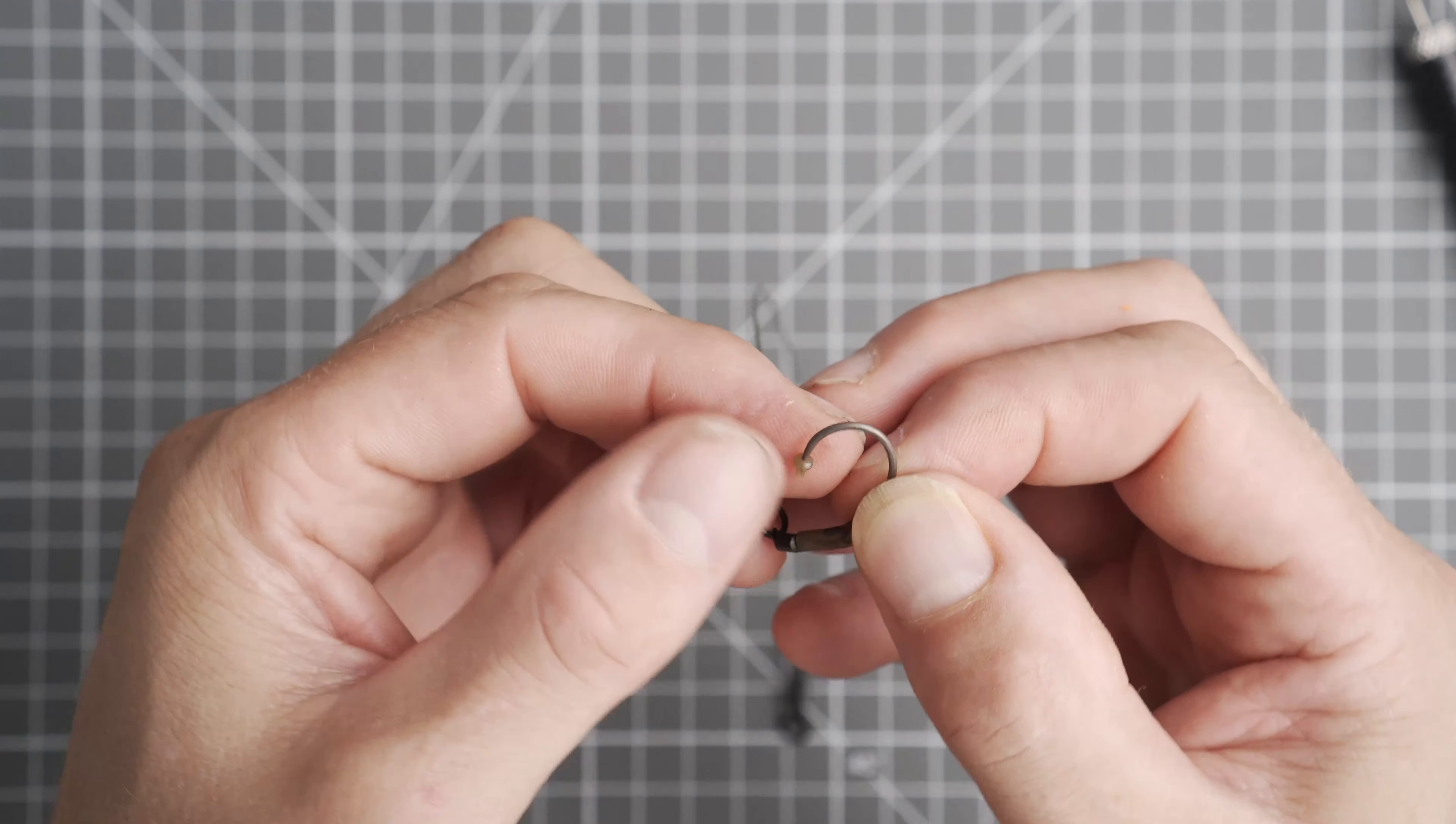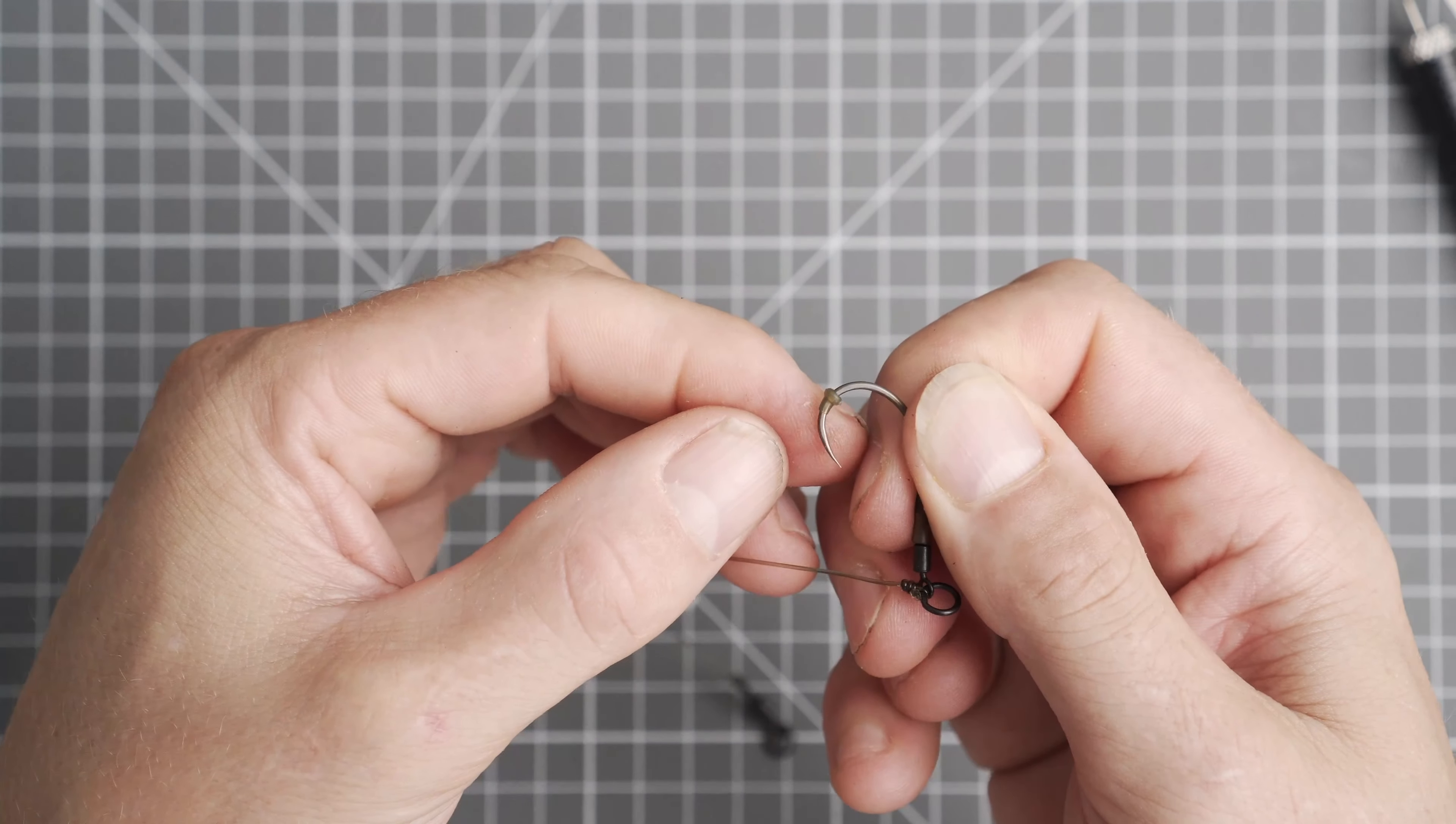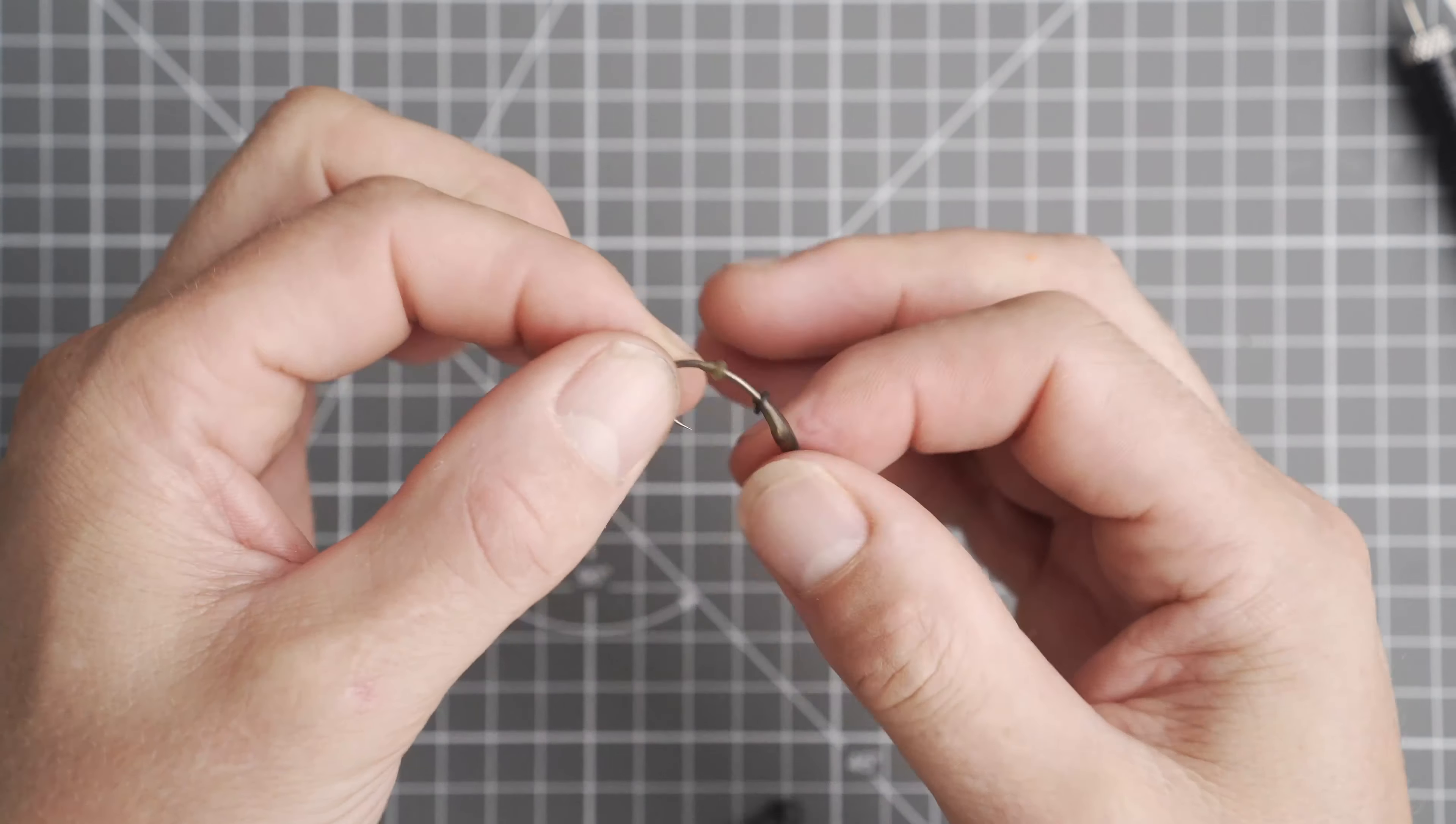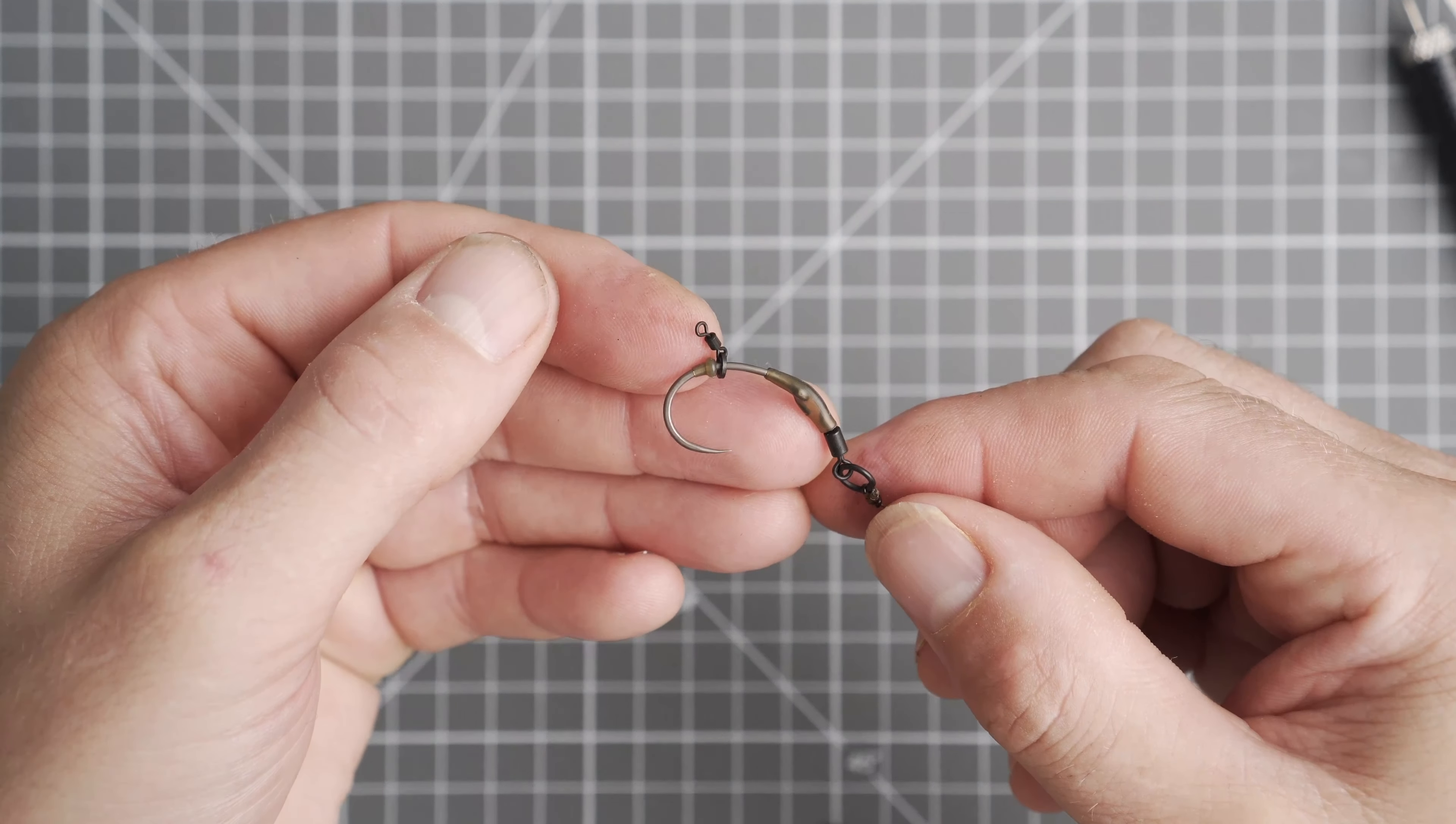The fat end first, slide that on and position in place. Now it's up to you where you like to position this. I like to position it just where the barb would have started on a barbed hook. And that's it. Perfect.